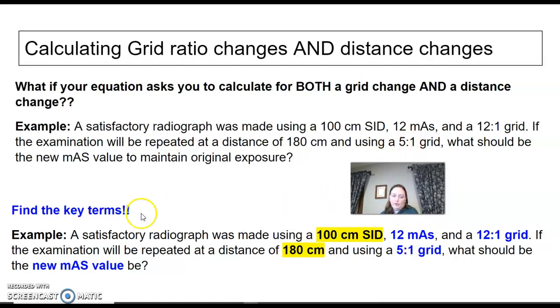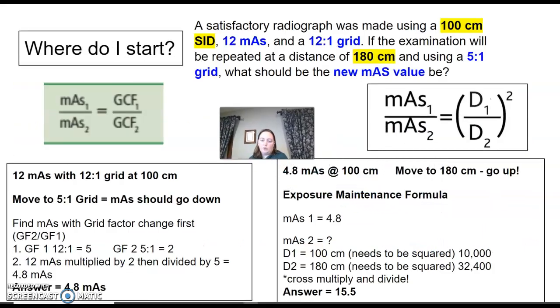Alright, so I found the key terms for you down here, and I'm going to show you how I know which ones are the key terms. First, I look to this end sentence, and it's asking me, what am I looking for? I'm looking for a new mAs. It gave me two different SIDs. It gave me an mAs and two different grids. So what you're actually going to do is use two different formulas. And if you've already gone over the inverse square law and the direct square law, you're going to use a little bit of both. It doesn't matter which way you start it or which order you do it in, but I do mine the same way every time.